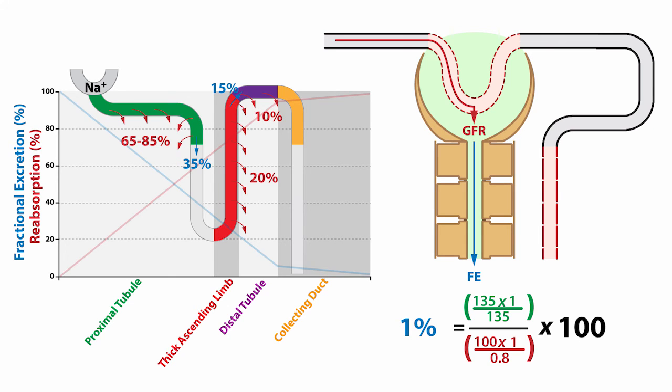An additional 10% of the filtered sodium load is reabsorbed along the distal tubule, which puts the reabsorption total at about 95% of the filtered sodium load and the fractional excretion at 5% as it enters the connecting segment and cortical collecting duct, where an additional 1 to 5% of the filtered sodium load is reabsorbed, which puts the total reabsorption of sodium at about 99% of the filtered sodium load and an average fractional sodium excretion of 1%.